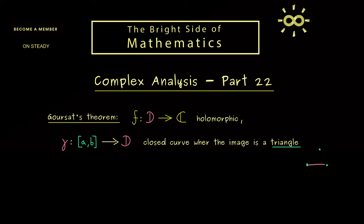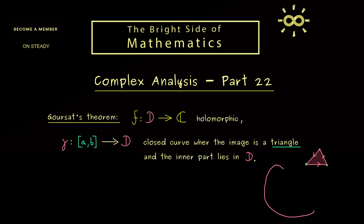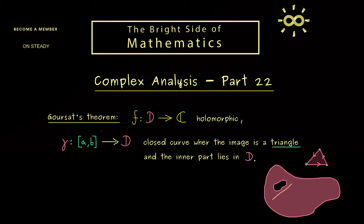More precisely, we have a starting point, then we go to a second point, then to a third point, and then finally back to the start — so gamma should be a curve like this. We also need the inner part of the triangle, meaning all the points inside should lie in the domain D. Hence we don't want to go around a point outside of D; since D is just an open set, there could be a hole inside it.